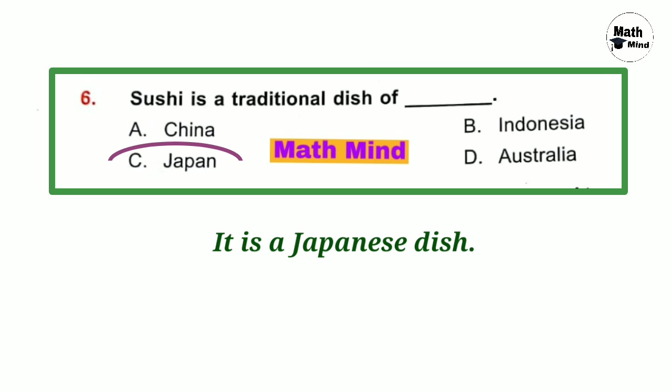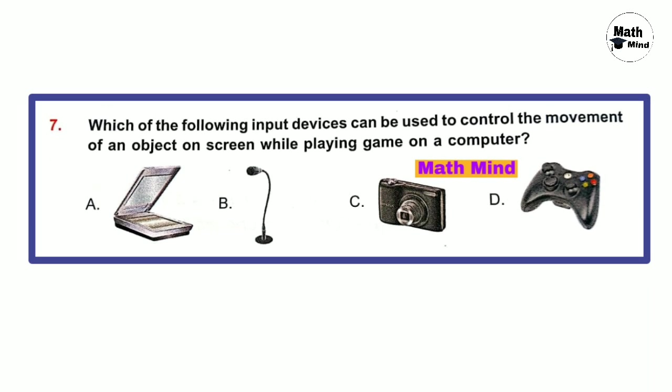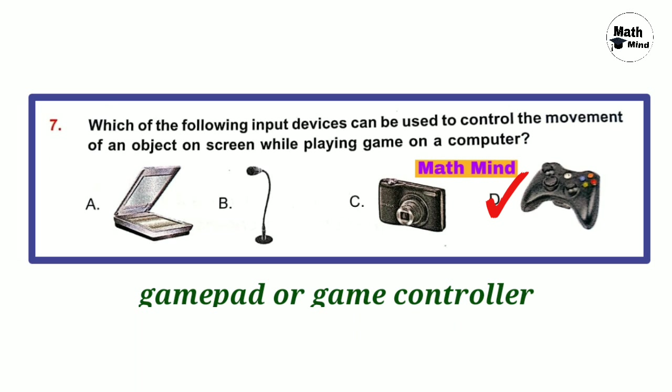Sushi is a Japanese dish — rice along with sugar, salt, seafood, and vegetables. Japanese people prepare sushi. Question number 7: Which of the following input devices can we use to control the movement of an object on screen while playing a game on a computer?